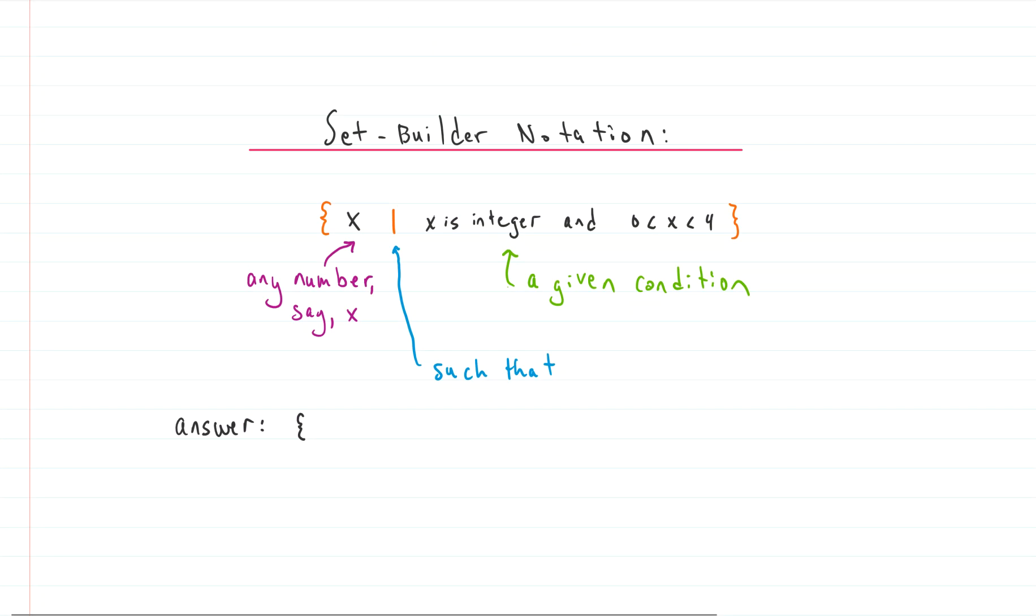A lot of times when we are dealing with sets, we'll use set builder notation. And we use set builder notation when the set is so big, maybe sometimes it's infinite and we can't write all of them down. So we use a different way to describe this set. We still use the curly brackets as you see on the end here, but we write this stuff on the inside a little bit different.